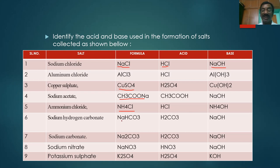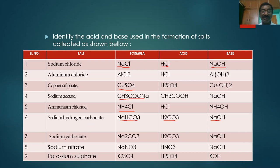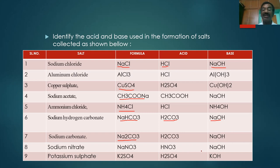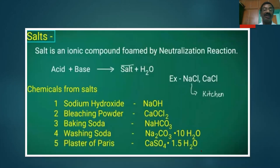Sodium Hydrogen Carbonate (NaHCO3) is formed by the neutralization of Carbonic Acid (H2CO3) and NaOH. Sodium Carbonate is formed by the neutralization of Carbonic Acid (H2CO3) and Sodium Hydroxide. Sodium Nitrate (NaNO3) is formed from HNO3 and NaOH. Potassium Sulphate is formed by the neutralization of Sulphuric Acid and Potassium Hydroxide.